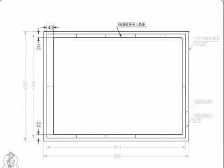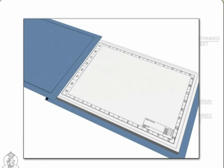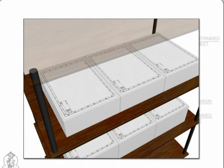Border Lines. Clear working space is obtained by drawing border lines as shown in the figure. More space is kept on the left hand side for the purpose of filing or binding if necessary. When prints are to be preserved or stored in a cabinet without filing, equal space may be provided on all sides.